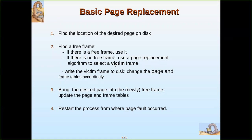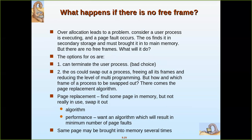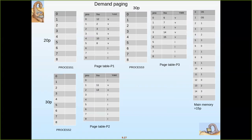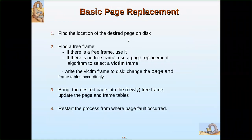Let us see the basics of page replacement. First we have to find the location of the desired page. For example, when I want to load a fourth page or a sixth page that is not present, this sixth page will be in the secondary storage and has to be brought in. That will be our desired page which is in secondary storage.